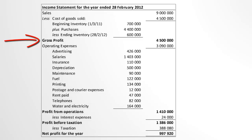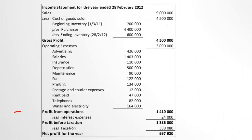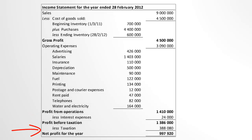Thirdly, we deduct all our operating expenses, which are all other expenses except interest and tax. This gives us the profit from operations, sometimes called EBIT or earnings before interest and tax. Fourthly, we deduct the interest expense and add any interest income we may have. Finally, taxation for the year is deducted to give us our net profit for the year.